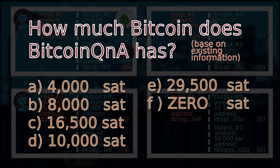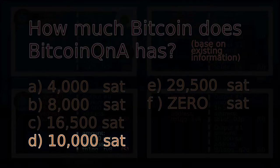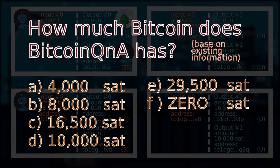If you picked answer D, 10,000 SATs, very good. That is the expected answer. But if you picked any other answer, you are also potentially correct. But we will explain that later in the series.